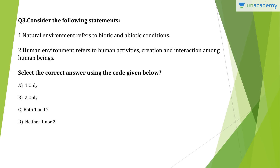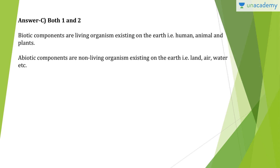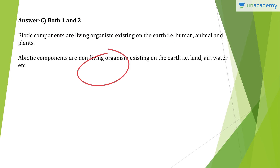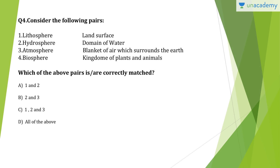Question 3: Natural environment refers to biotic and abiotic conditions; human environment refers to human activities, creation, and interaction among human beings. Answer: both statements are absolutely correct. Biotic components are living organisms existing on the earth — humans, animals, plants. Abiotic components are non-living organisms existing on the earth — land, air, water, etc. Question 4: Lithosphere is land surface, hydrosphere is the domain of water, atmosphere is the blanket of air around the earth, and biosphere includes plants and animals. Answer is D, all of the above.